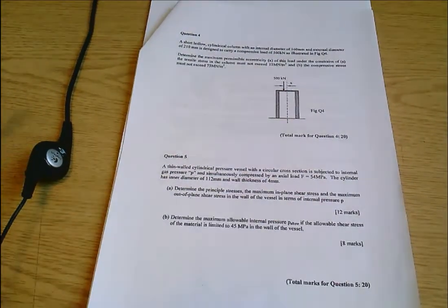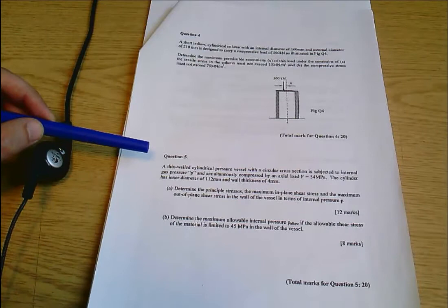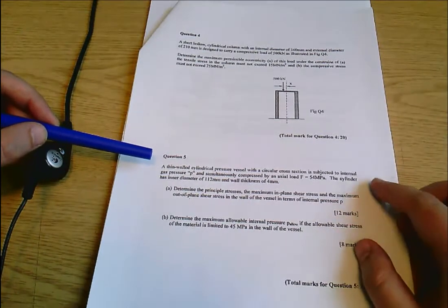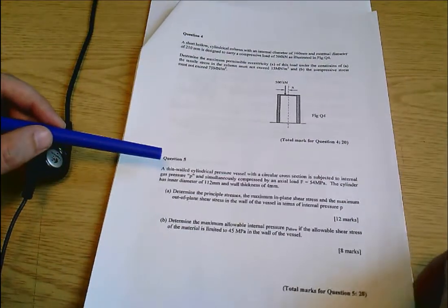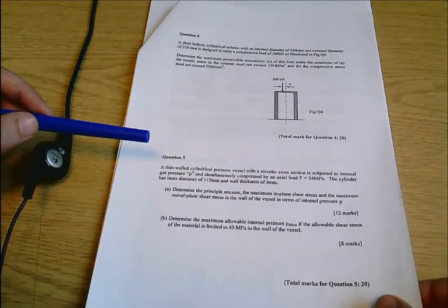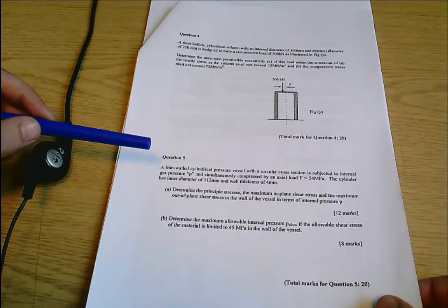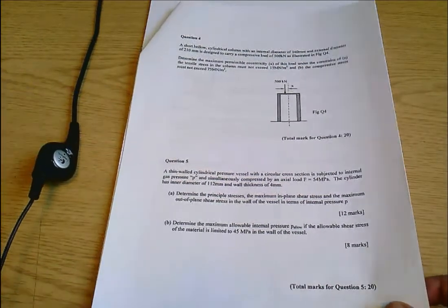The question is about a thin-walled cylindrical pressure vessel with a circular cross-section, an internal pressure of P, and an axial load F equals 54 megapascals.